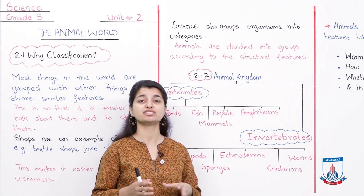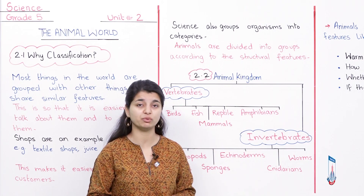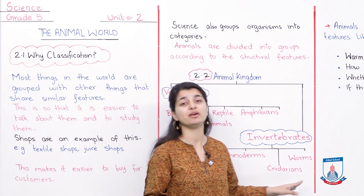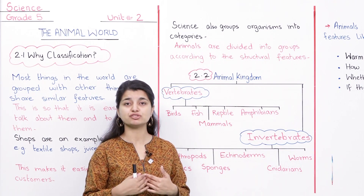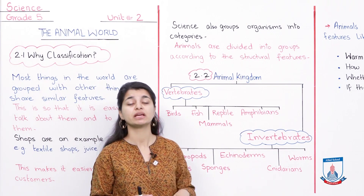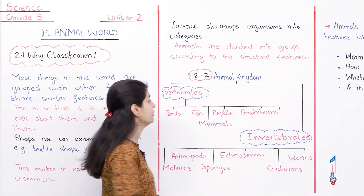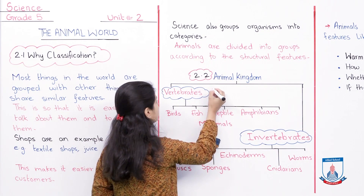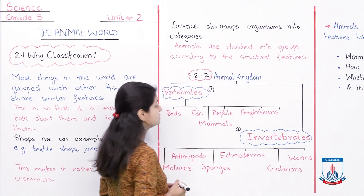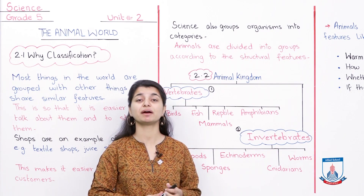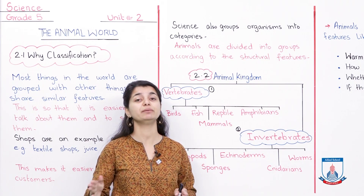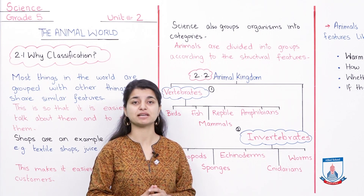Invertebrates either have a hard shell or a soft body - like earthworms, which are slimy - and they are invertebrates. However, humans and many other animals have a backbone, so they are vertebrates. The main classification is vertebrates and invertebrates. But is that it - just these two categories? No. After that, they also have several sub-types. Vertebrates have 5 different types, and invertebrates have 6 different types, with different animals falling into these groups.